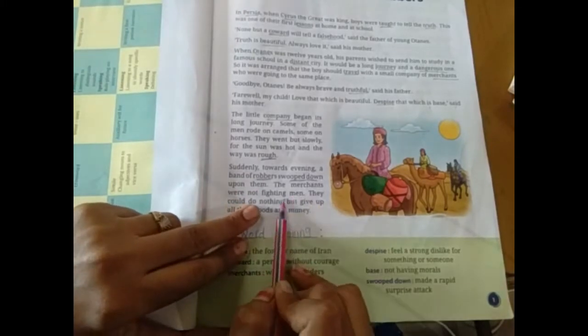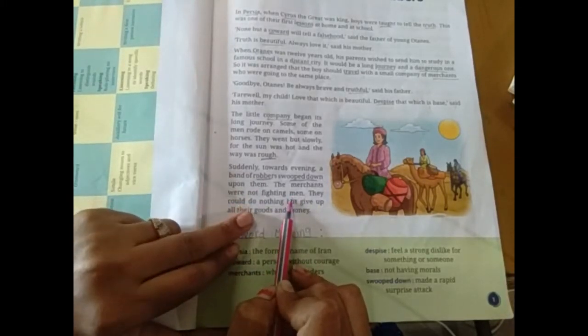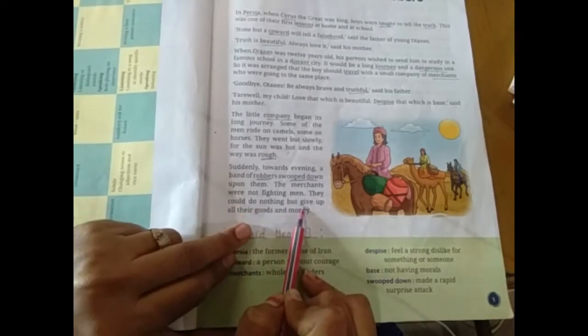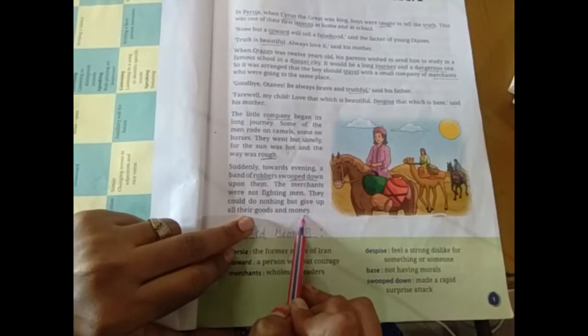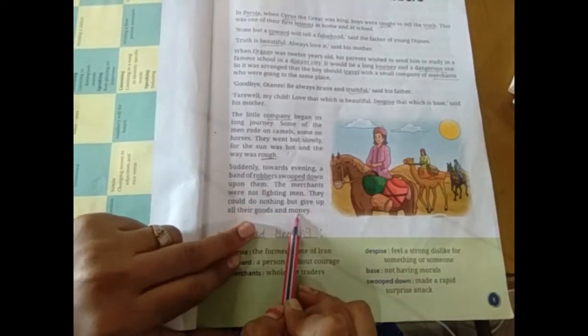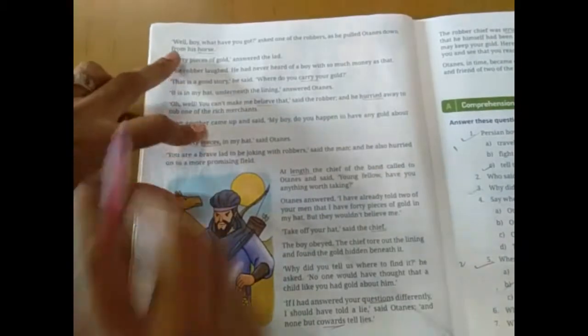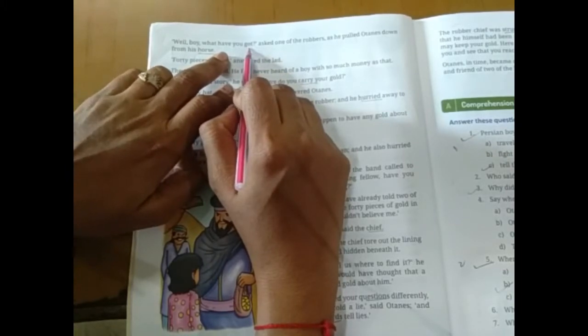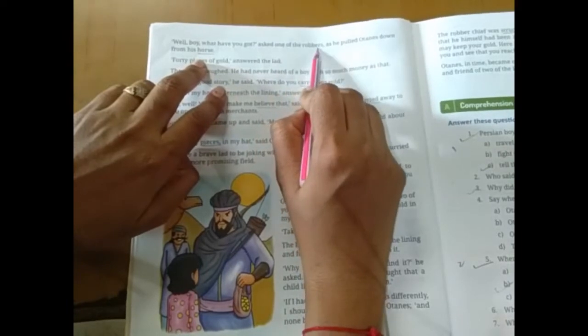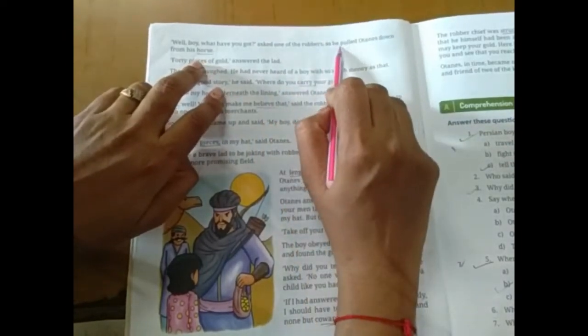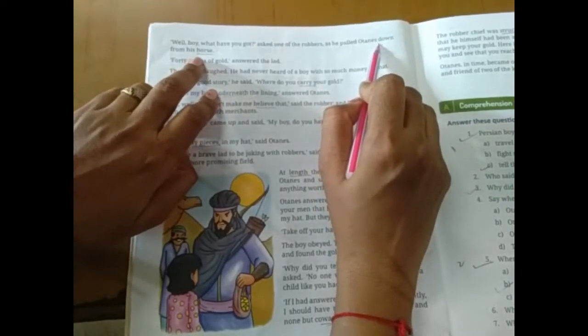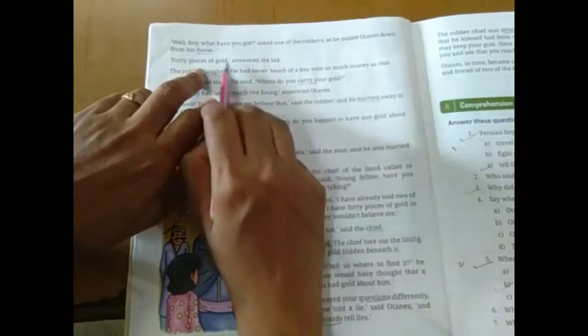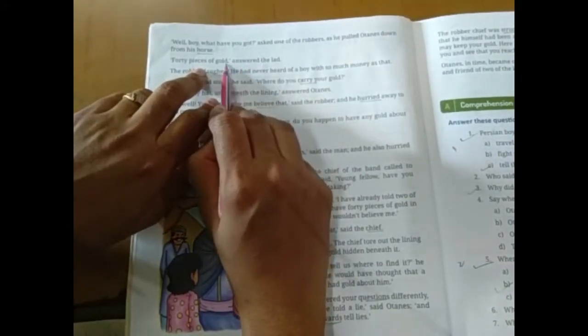The merchants were not fighting men. Wo log fighting karne walon mein se nahi the. They could do nothing but give up all their goods and money. Well, boy, what you have, you got? Kya bolte hai? Boy ke paas chate hai wo, robbers. Pur puchte hai kya aapke paas kya hai? Asked one of the robbers.